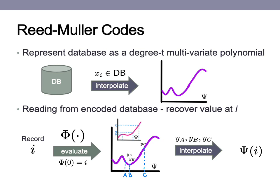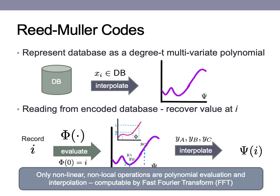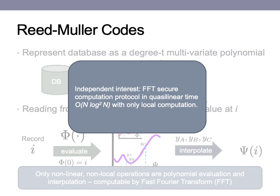When emulating this process using two servers, the only steps that are non-local or non-linear operations are the two interpolations and the random polynomial evaluation, as it depends on the secret shared record i. The naive way to compute these steps is an n-squared operation of a matrix multiplication, which would not work for our reshuffling process that must be less than n-squared. However, these operations are also computable by fast Fourier transform, or FFT, algorithm. We introduce an FFT secure computation protocol that can evaluate or interpolate the polynomials in quasi-linear time n log² n with only local computation, meaning that computing the FFT during these steps does not incur any additional rounds. We believe this protocol may also be of independent interest to the crypto community.